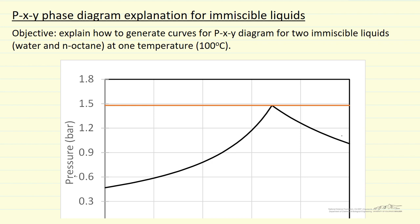I'll describe how we generate a pressure mole fraction phase diagram for two immiscible liquids at one temperature, in this case 100 degrees C. The liquids are water and normal octane. Let's look at the diagram and then talk about the various parts on the diagram.